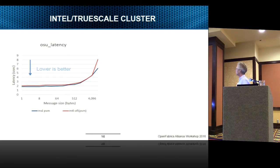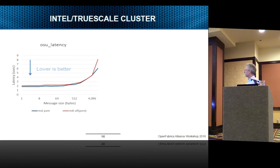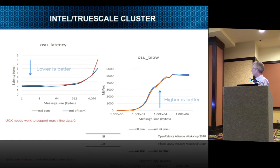Starting with the Intel TrueScale cluster, running the basic OSU latency test — lower is better. This is exactly what I would expect because the OFI MTL over PSM is just a thin layer on top of PSM, so performance-wise there's very little penalty. That's not too interesting since it's been there for a year — nothing surprising. The same thing for bandwidth; I ran the OSU bi-directional test because it's a little more stressful on the MPI. That all looks good and it's exactly what I expected.